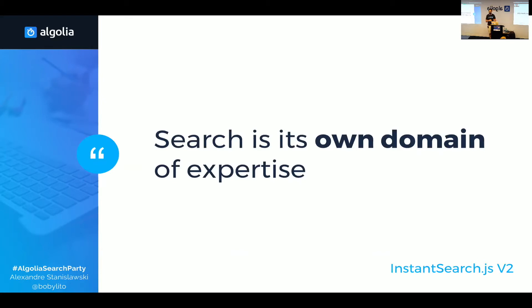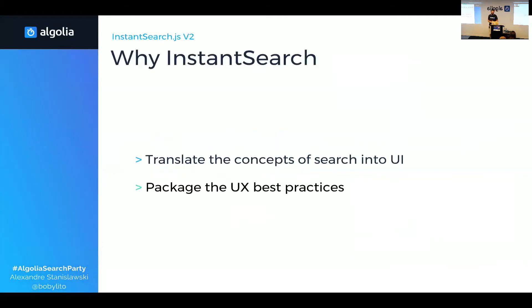On the other hand, you have UX best practices that are specific to search — for example, how to make a good search input. Gaining this knowledge is really hard. We know that search is important, but search is only part of your project. We solve that with InstantSearch by translating the concepts of search into UI elements, and packaging in those UI elements the UX best practices by default.